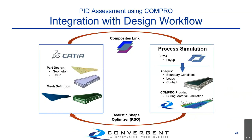Going back to the design flow for compensating process-induced deformations, with that compensated tool shape you go back into CATIA, regenerate your mesh, import it back into Abaqus, run through the Compro simulations, and verify whether you have the required part shape. Sometimes it's not a one-step process — you need one or two iterations to get the desired part shape because it's a very interdependent process. But that is a tried-and-true workflow for compensating your process-induced deformations.